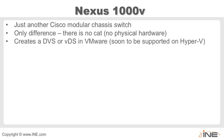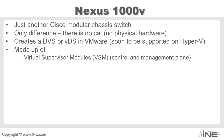This creates a distributed virtual switch, also referred to as a virtual distributed switch or VDS, in VMware. It's now supported on Hyper-V and will be supported on other hypervisor platforms as well. It's made up of a virtual supervisor module — always a pair, so modules — and those take care of the control and management plane. Then there are virtual Ethernet modules, or VEMs, and these refer to the data plane.